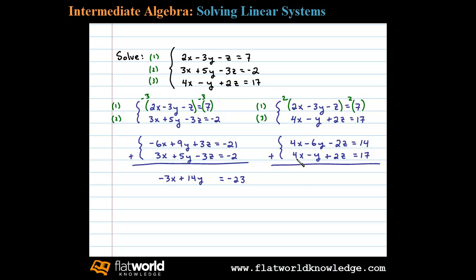So when we add these equations together, we're left with 8x minus 7y equals 31. Now we're left with two equations with two unknowns.